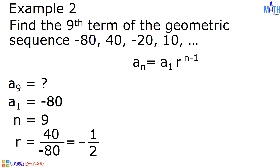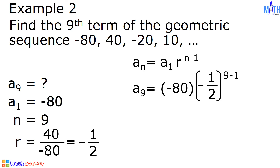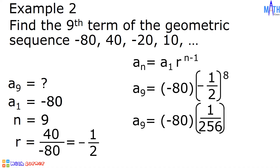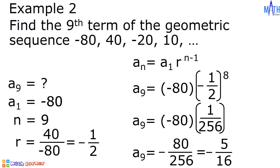Let us use the formula and substitute all the given values. For a sub n, we have a sub 9. a sub 1 is negative 80, r is negative one-half, and n minus 1 is 9 minus 1, which equals 8. We have a sub 9 equal to negative 80 times negative one-half raised to 8, which equals positive 1 over 256. Negative 80 times 1 over 256 is equal to negative 80 over 256. In lowest terms, this is negative 5 over 16. And this is the 9th term of the geometric sequence negative 80, 40, negative 20, 10, and so on.